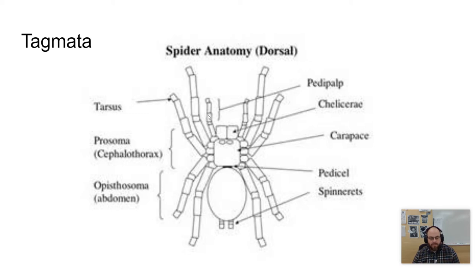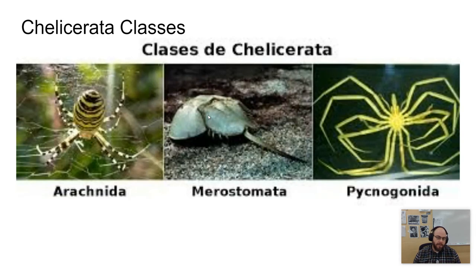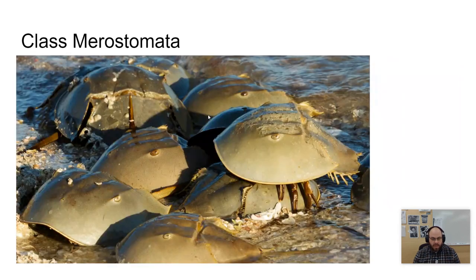There are three classes found in Chelicerata: Merostomata, Pycnogonida, and Arachnida, which you're probably most familiar with. We're going to spend a whole video on Arachnida, but today we'll cover the other two classes.